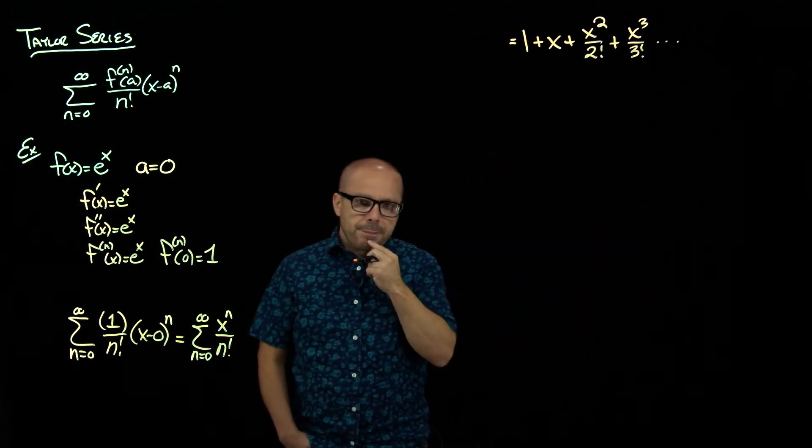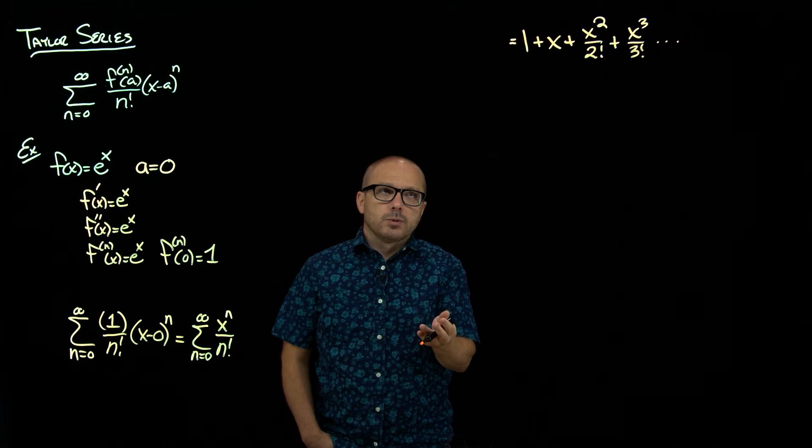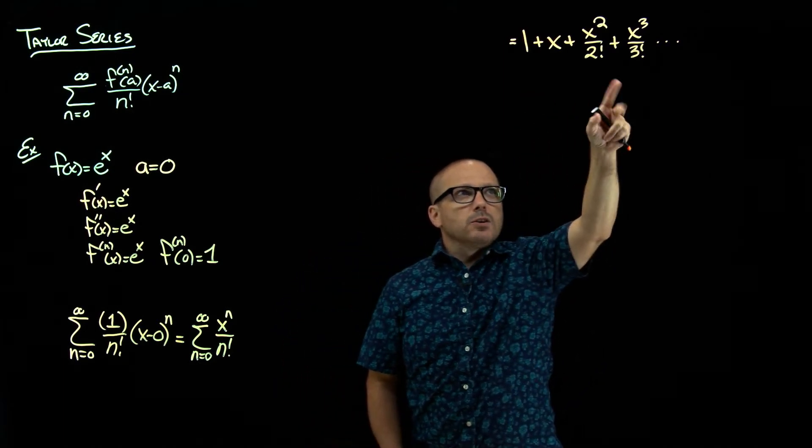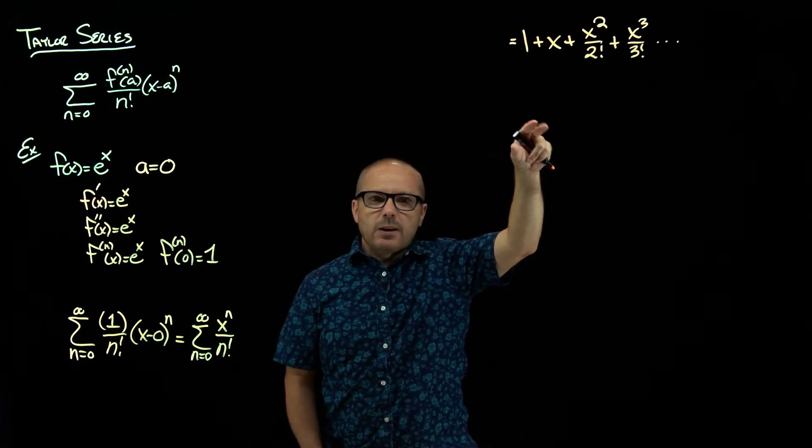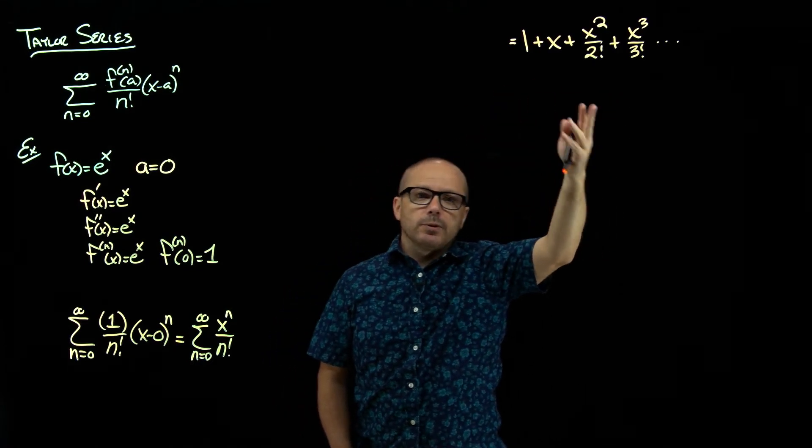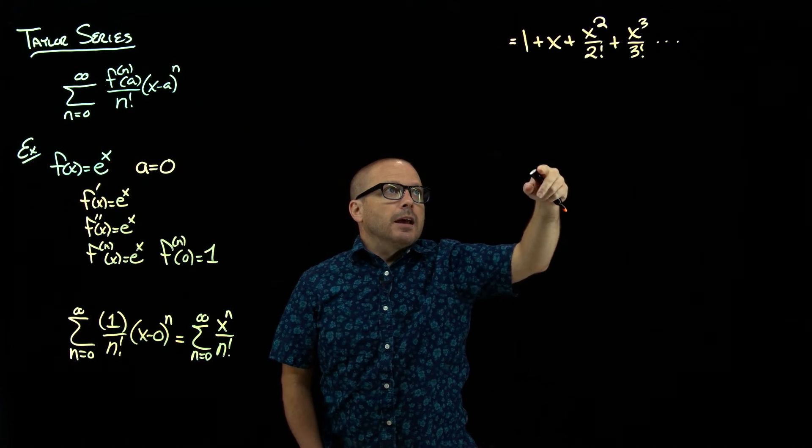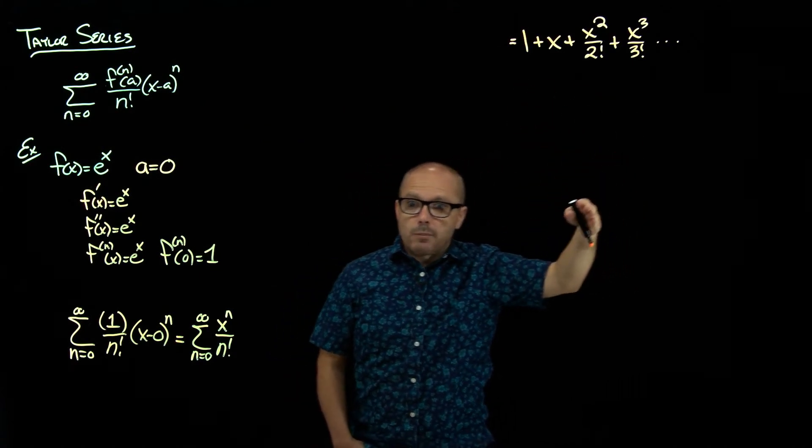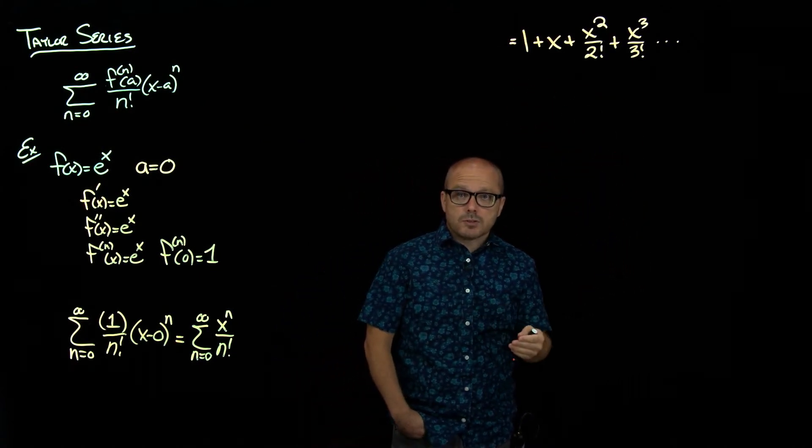Now, in practice, what we'll do is when we want to use this series, often at the end we want to evaluate it at some point. Maybe at x equal 2 or x equal half or something. And we're going to have to stop somewhere and approximate that series with a partial sum.